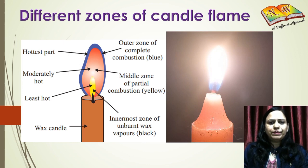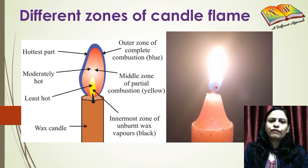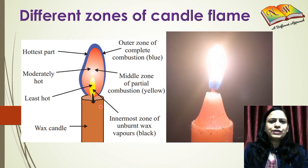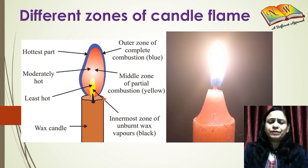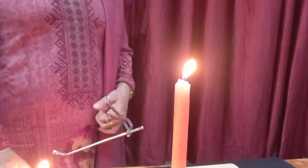The innermost zone of the flame is at the bottom — it is dark in color and is the zone of no combustion. There is no combustion taking place here; it is only the vapors of wax being formed. When we hold a metallic pipe in this region so that the vapors get an outlet through the pipe, we can observe a flame at the other end if we bring a burning matchstick close to it.